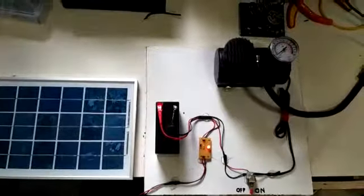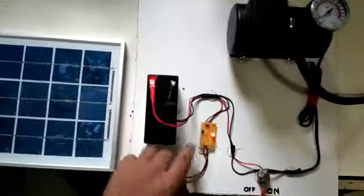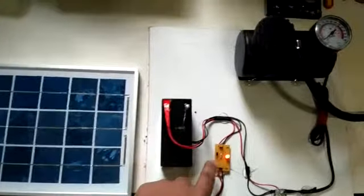Hello, this is the project demonstration of solar air compressor. In this project, here is the solar panel. We charge this battery using this protection circuit. We can monitor the charging using this charging circuit, and it goes to the battery.